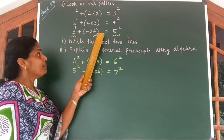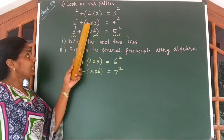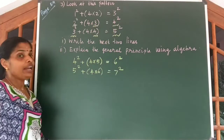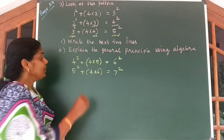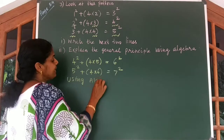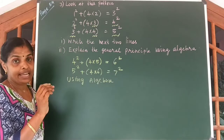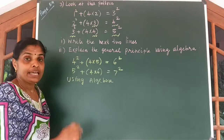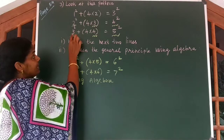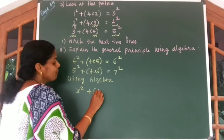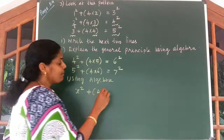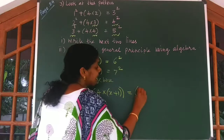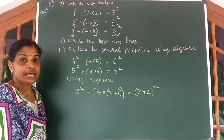The 3 numbers are consecutive numbers. Take any one of these lines — you will understand the numbers, like 2, 3 and 4. They are consecutive natural numbers. Using algebra we can write the first number as x, the second number as x plus 1, and the third number as x plus 2. So let us write: x square plus 4 into (x plus 1) is equal to (x plus 2) the whole square.